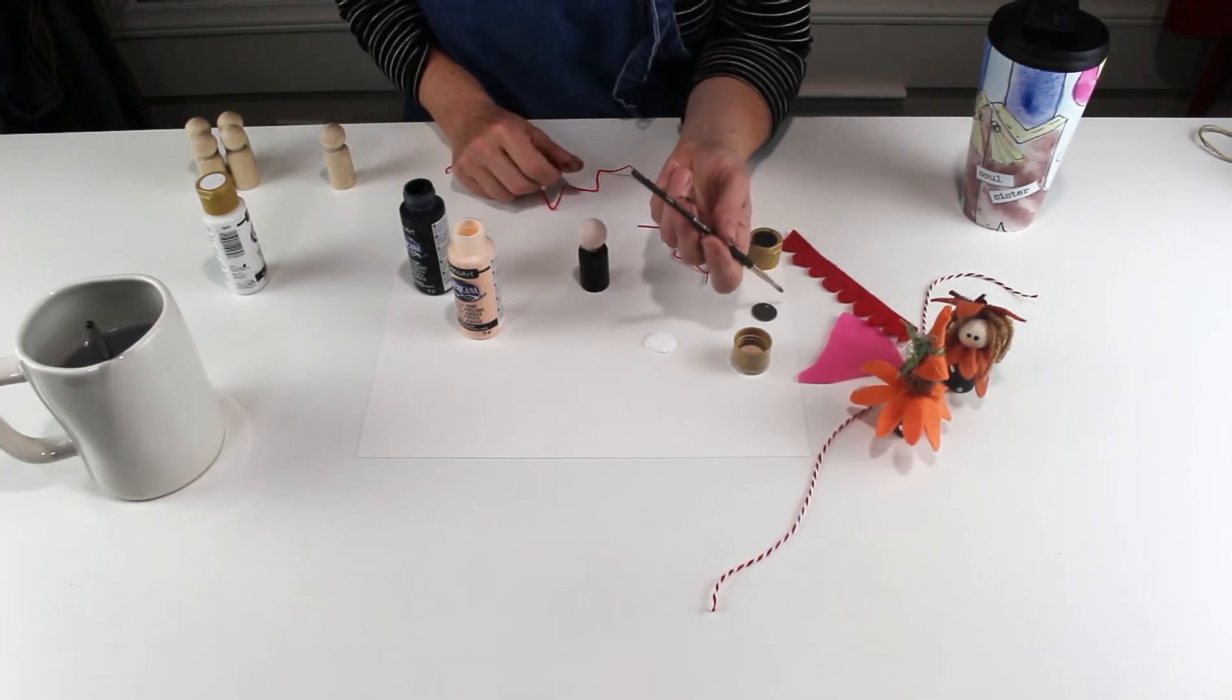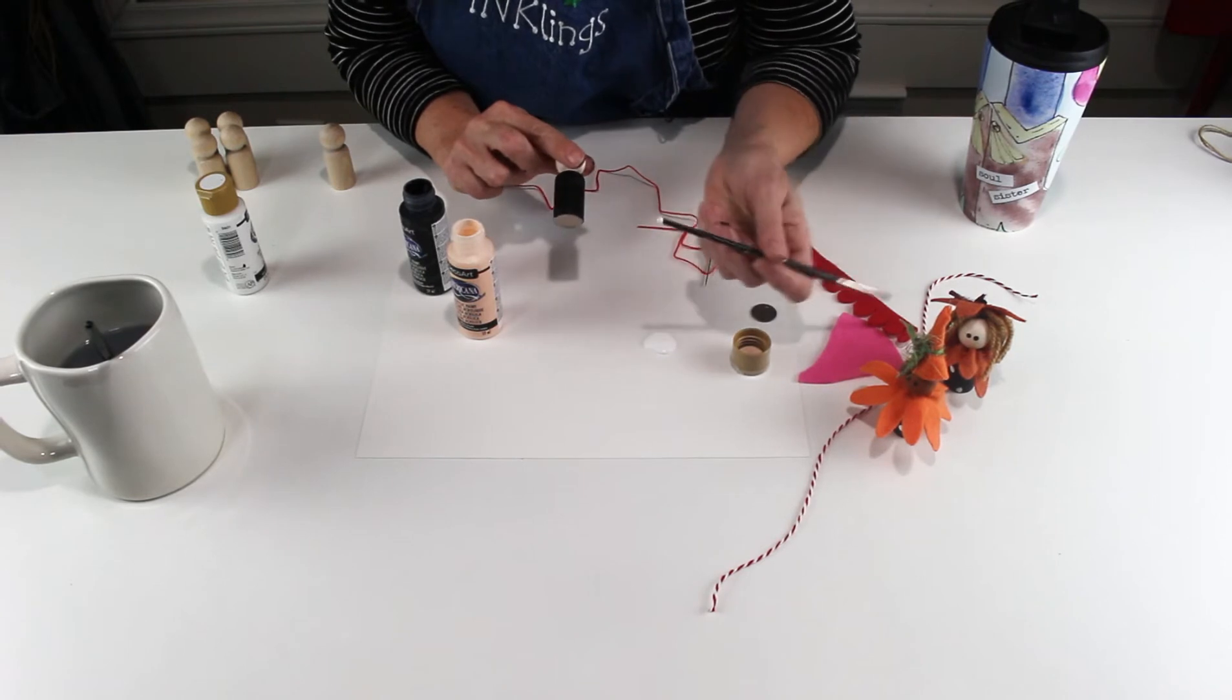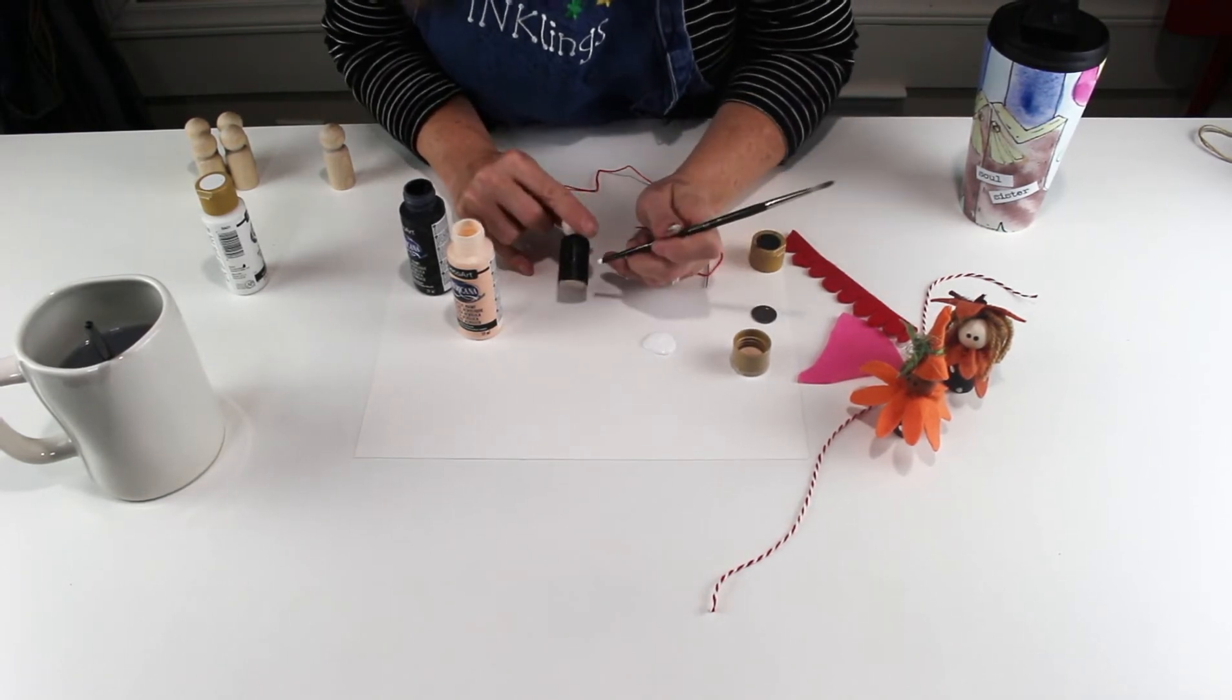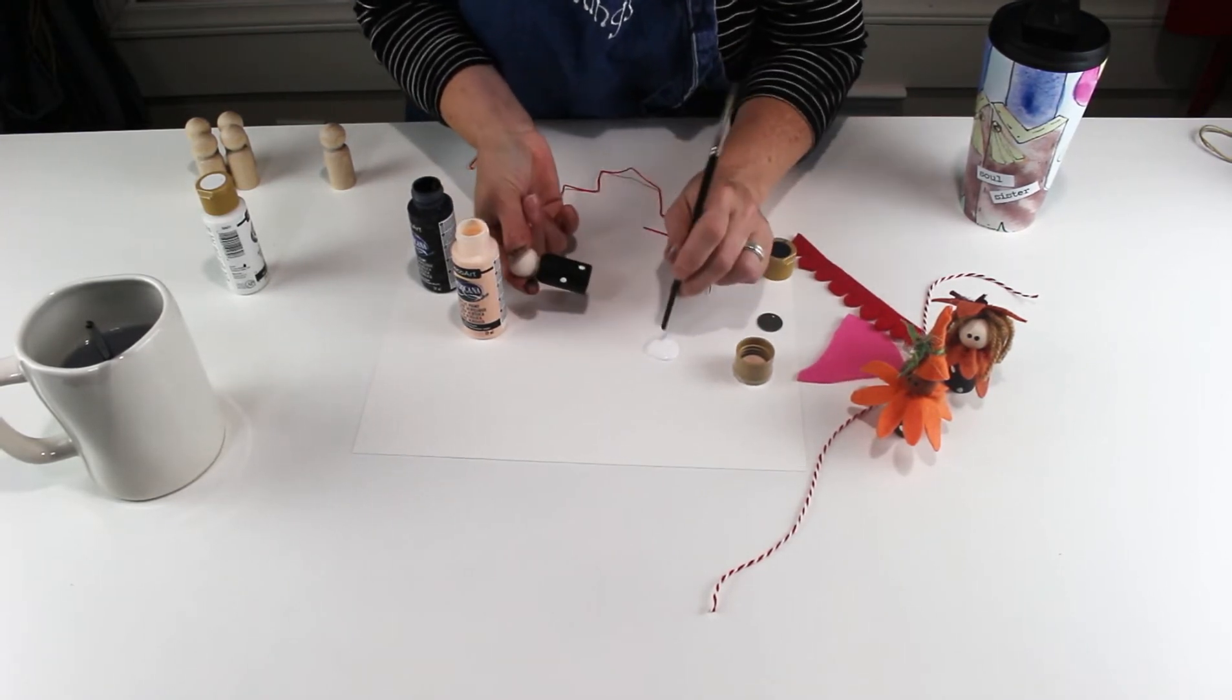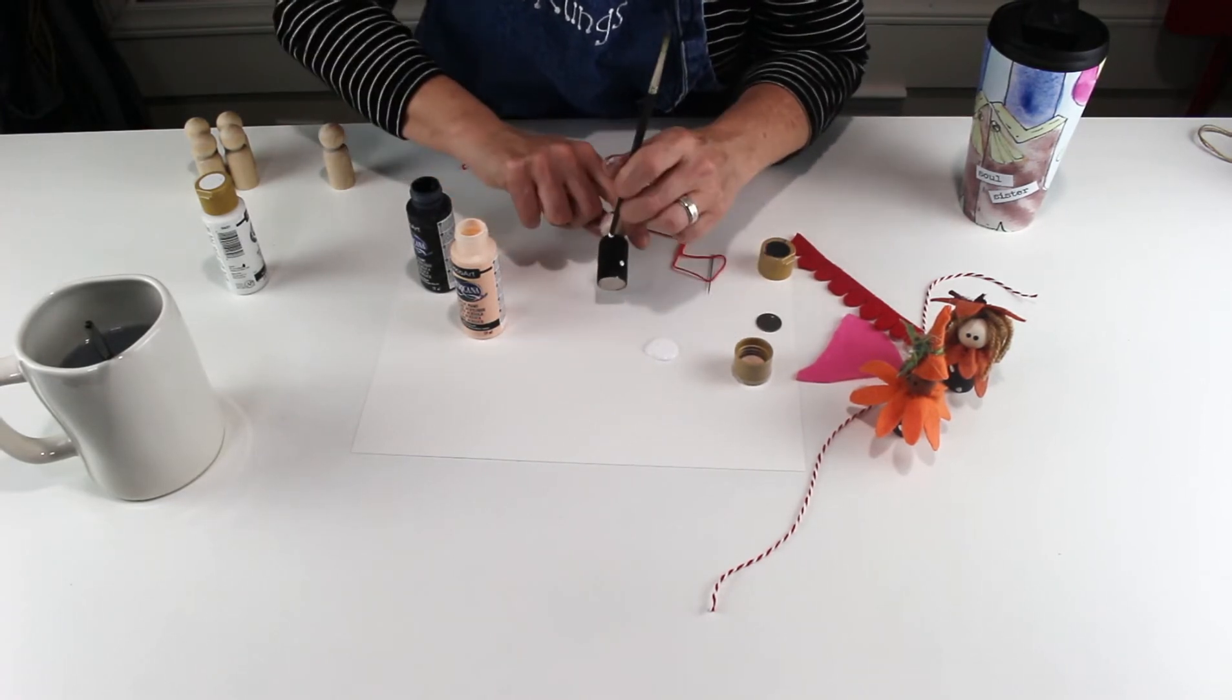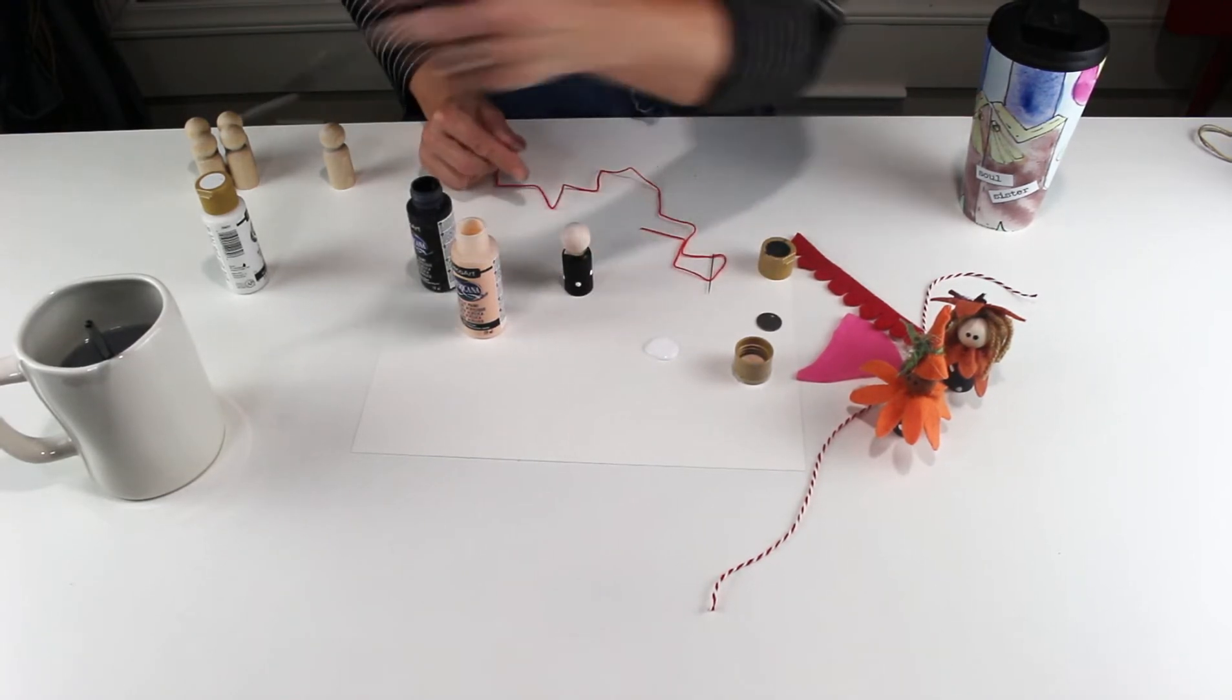You're going to use this end of your paintbrush to do your dots. So you're going to hold your little guy by the head, and you're going to dip the end of your paintbrush into the little white paint, and then you're going to do your dots like that. And that's how you get those perfect little round dots. Pretty amazing. And then you're going to let this dry completely before you do your next step.